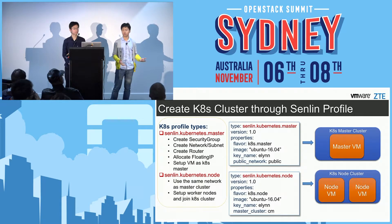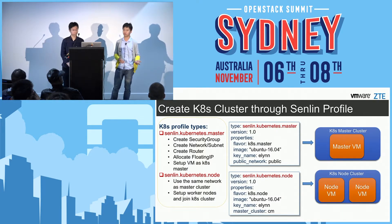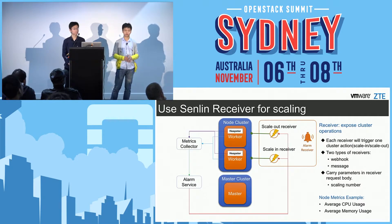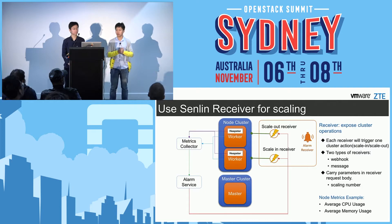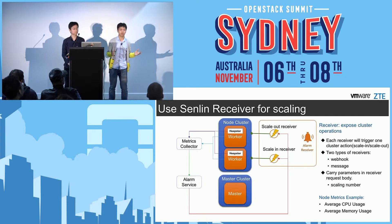Standing up a Kubernetes cluster is easy, but what about day two? How do we manage and operate the cluster — how do we scale in or scale out? To solve this, I use receivers in Senlin. Each receiver for the cluster maps to a cluster operation, like scale-out or scale-in. When the receiver gets a signal, it triggers Senlin to perform that cluster operation; for example, a scale-out will cause Senlin to create a new node and join it to the cluster automatically.